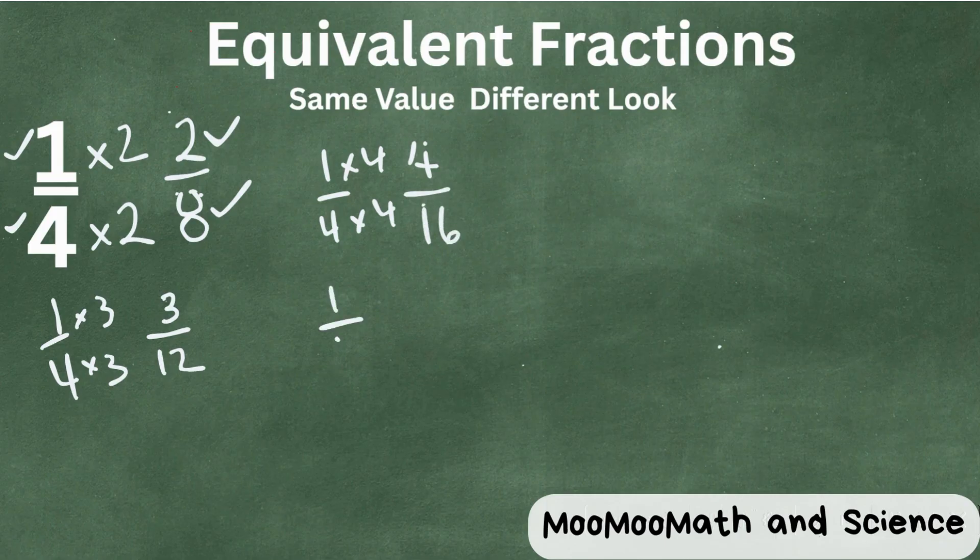One-fourth times five. When we do this, we have five twentieths.